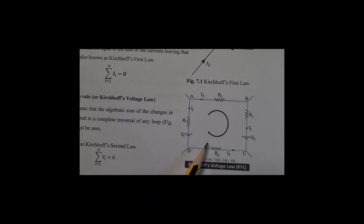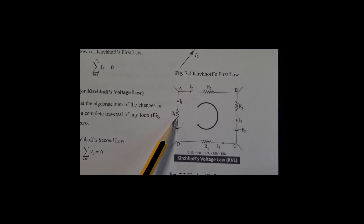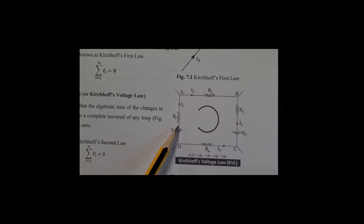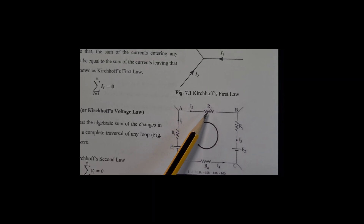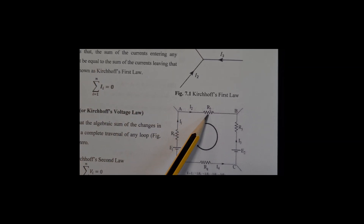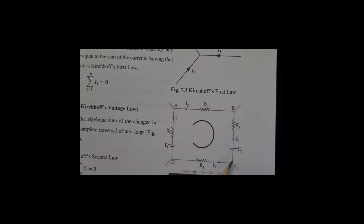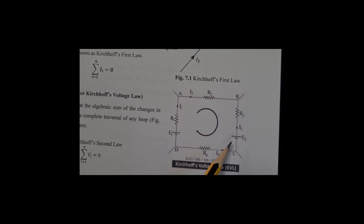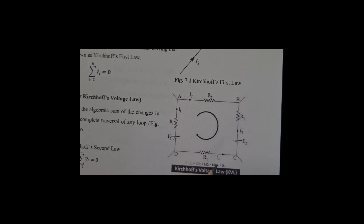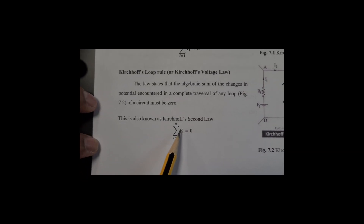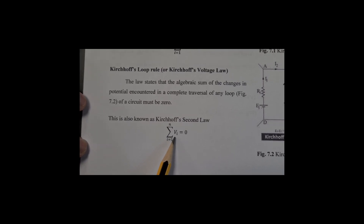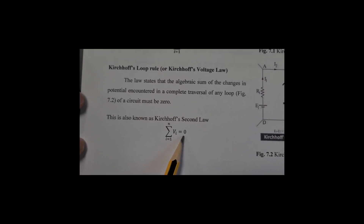Coming to the Kirchhoff Loop Rule — what is a loop? A loop is a closed circuit constructed using various circuit elements, especially for the Kirchhoff Loop Rule: resistors and EMF sources. The algebraic sum of the potential difference across each circuit element should be equal to zero. This is your Kirchhoff Loop Rule.